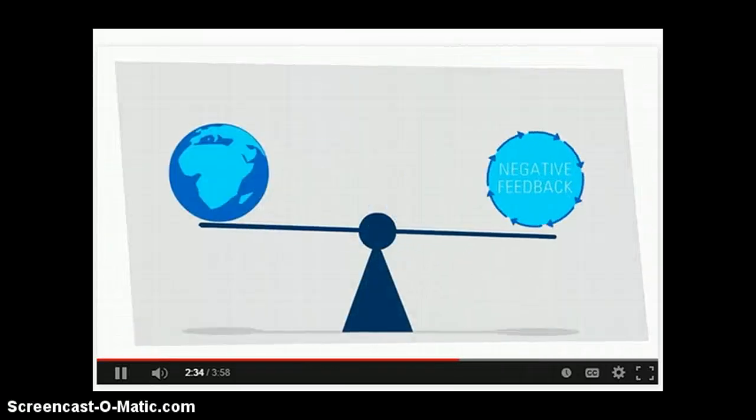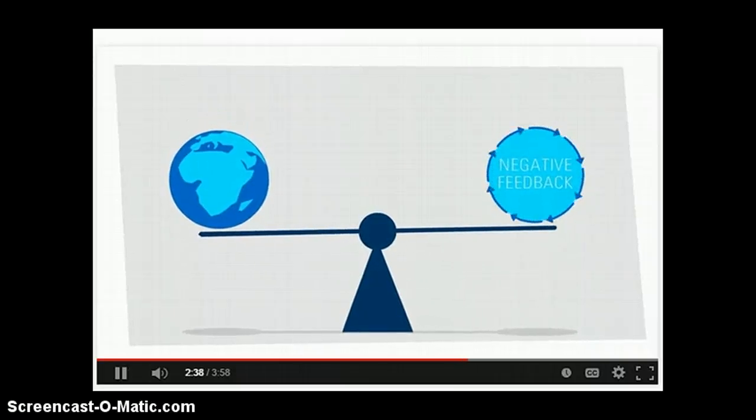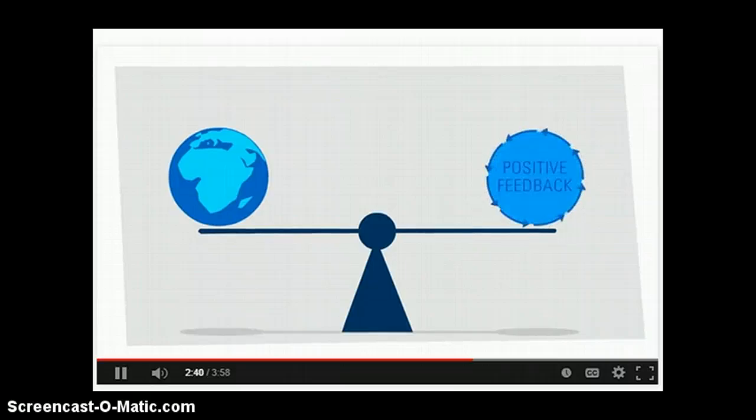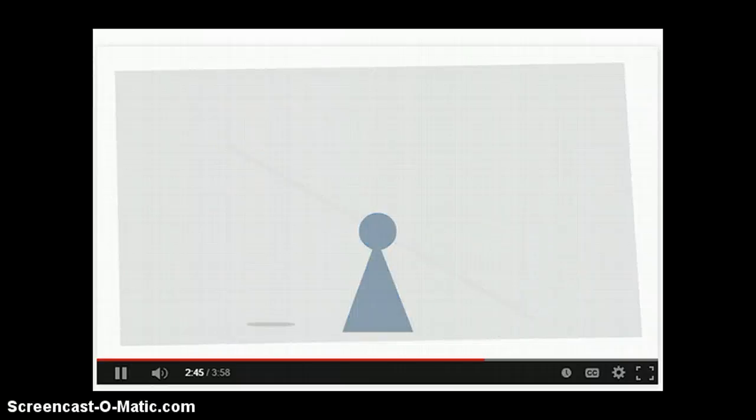While negative feedback loops encourage stability by pushing a system towards equilibrium, positive feedback loops destabilize it by enabling larger and larger deviations. And the recently increased impact of positive feedbacks may have consequences far beyond the Arctic.